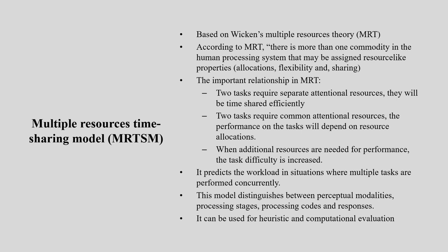Let us start with the multiple resources time-sharing model. This particular model is based on Wickens' multiple resource theory. According to this particular theory, there is more than one commodity in the human processing system that may be assigned resource-like properties — allocation, flexibility, sharing, and all those things. We need to understand in a system how these are being placed, and once we understand, we can make the connections.